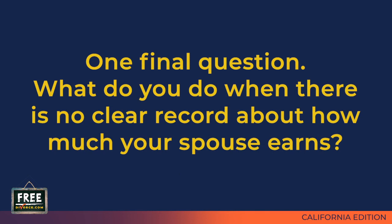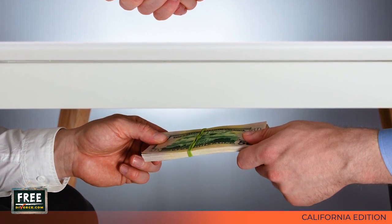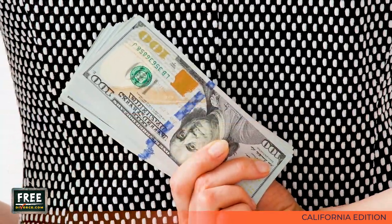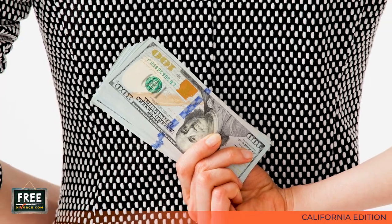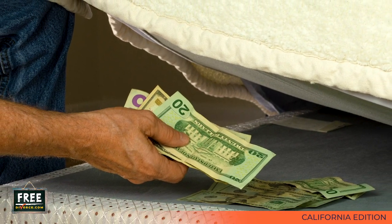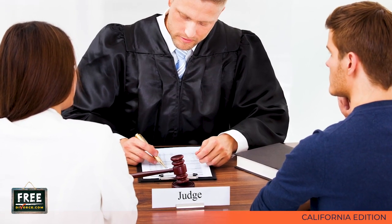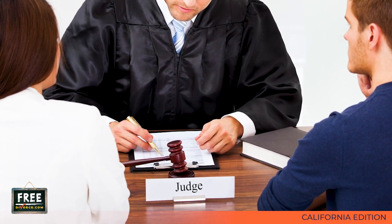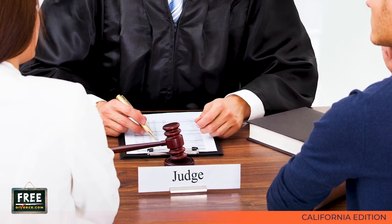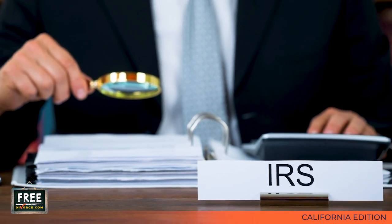One final question: what do you do when there's no clear record of how much your spouse earns? This can be a real problem — perhaps your spouse works under the table, is self-employed and not reporting all income, or is writing off personal expenses as business expenses. In settlement negotiations, both parties must be honest about each party's true income. If one person is not going to be honest, you're probably not looking at an uncontested divorce and will face a contested divorce, at least on support issues. If the matter goes to litigation and one spouse testifies that the other has not reported all income on joint tax returns, the judge may contact the IRS and you could be facing an audit — a problem for both parties.